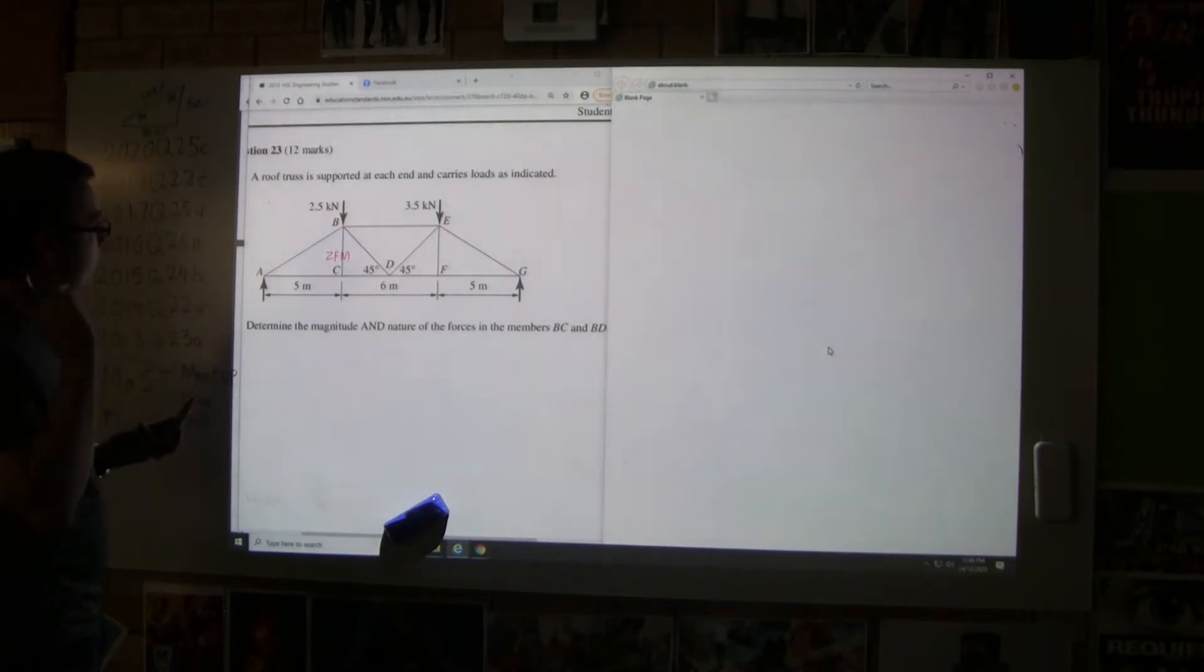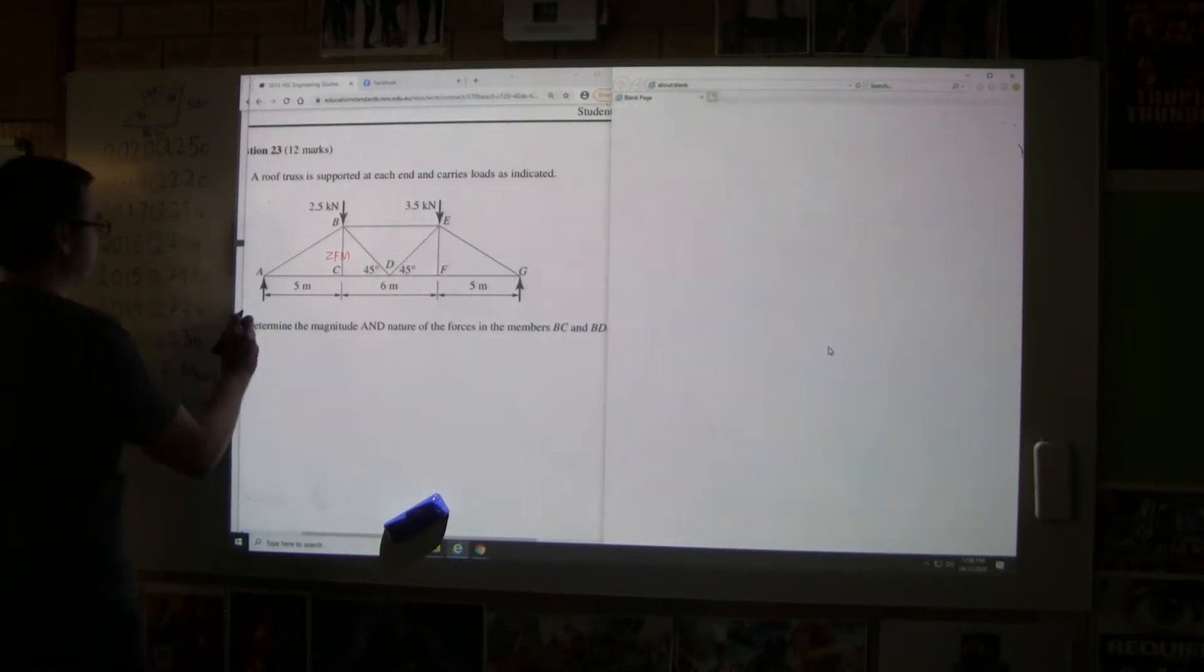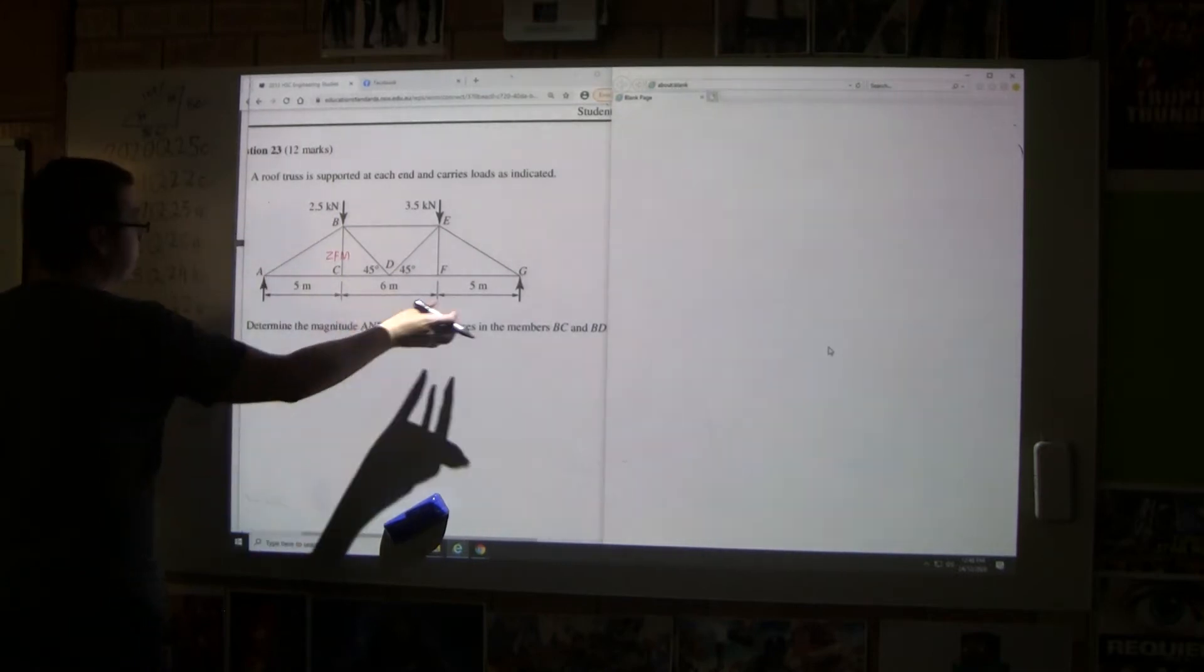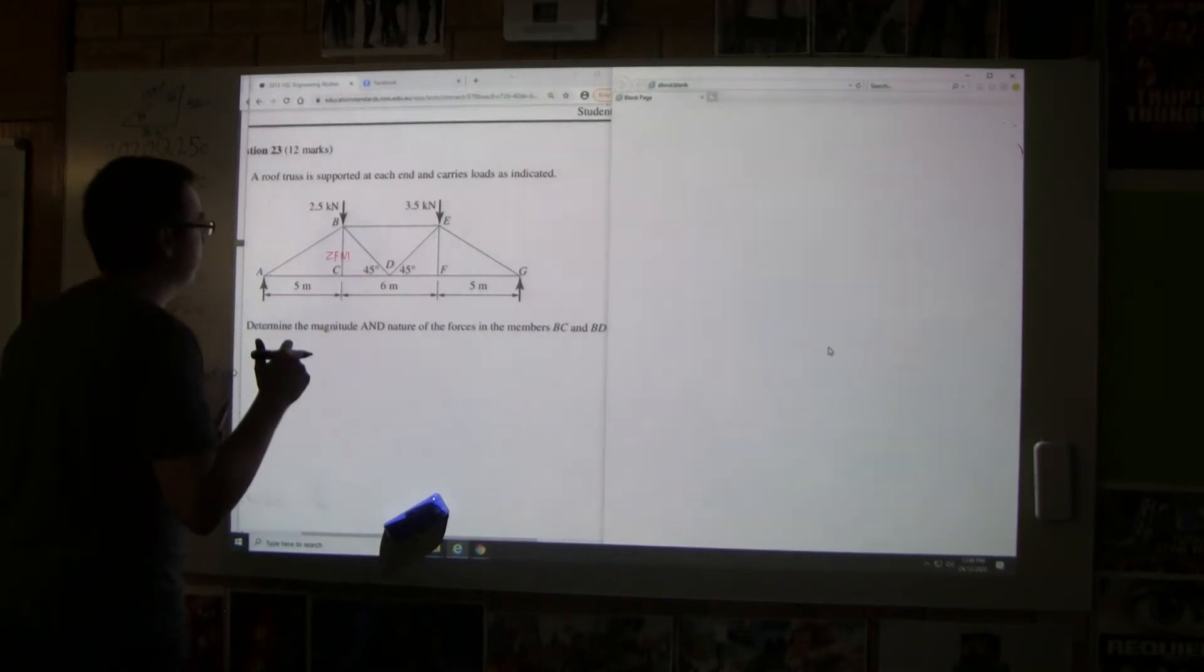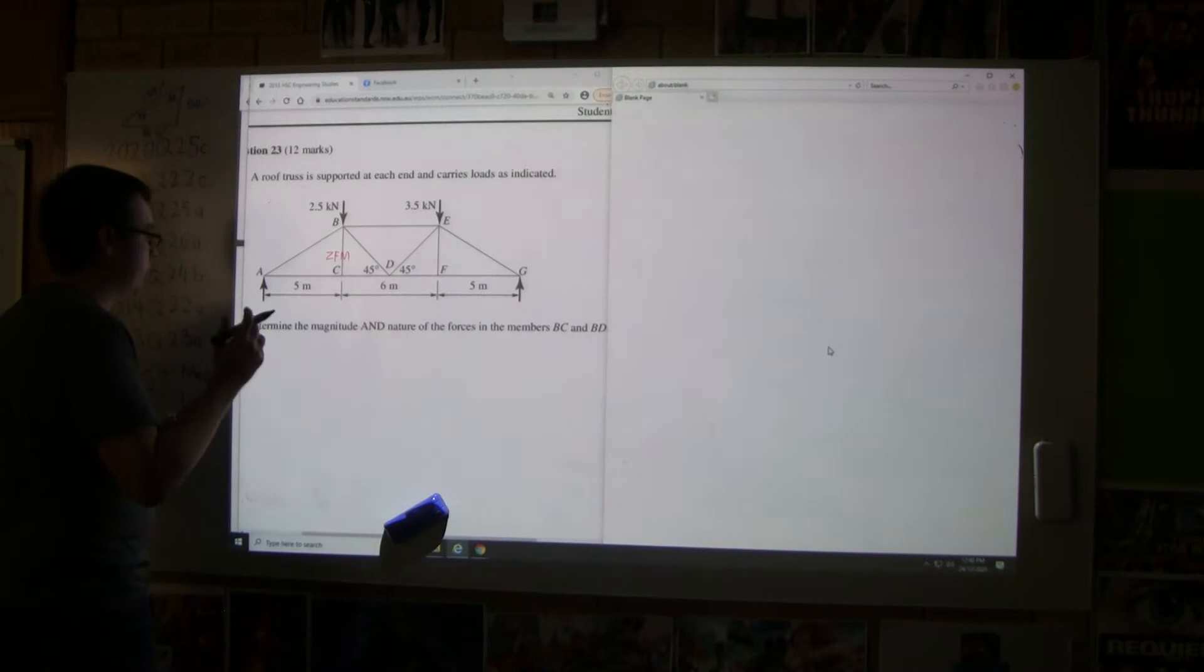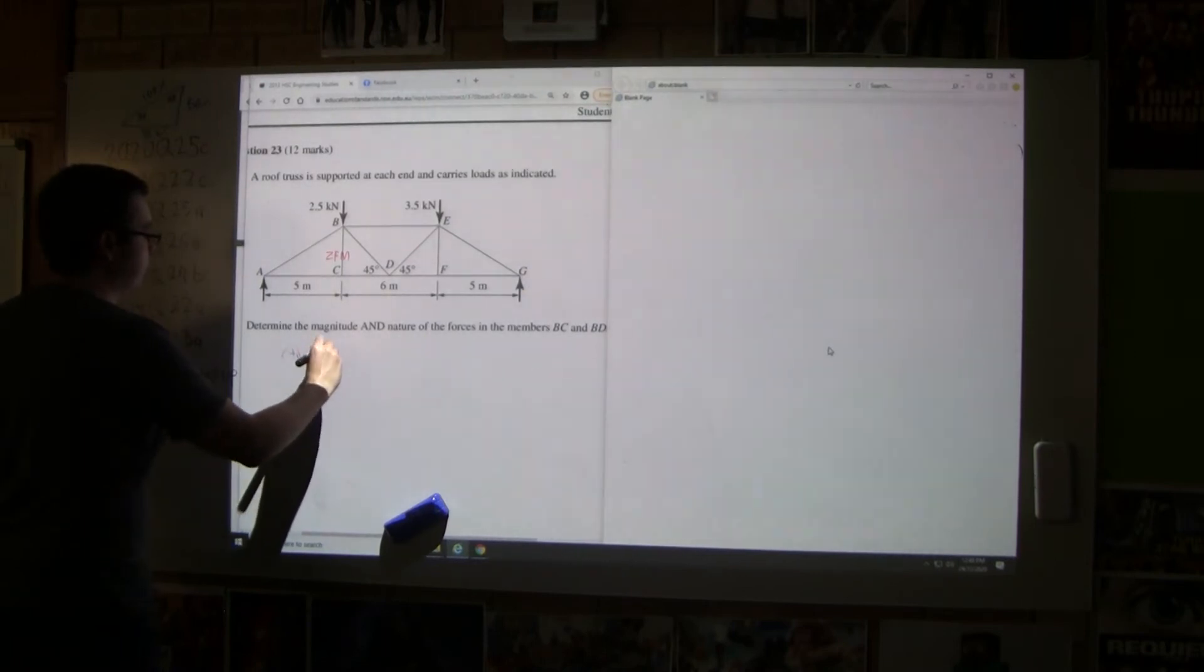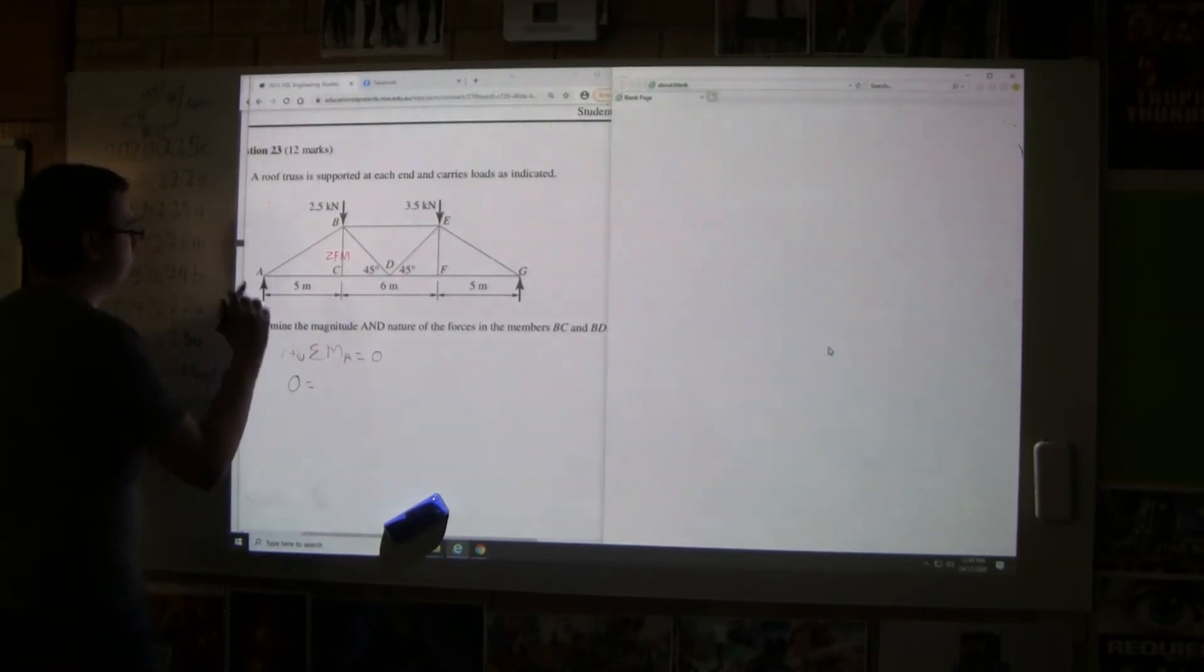It doesn't matter which side we start with. Unfortunately, there are some people who would be able to say, by inspection it's going to be slightly bigger on this side because it's taking more load, but I'm not exactly sure what it is. We're just going to do it by the maths. So we're going to take moments about A to find G. Sum of the moments about A equals zero. We've only got four forces, that makes it pretty easy.